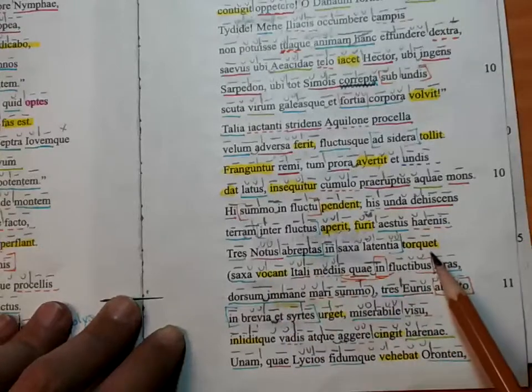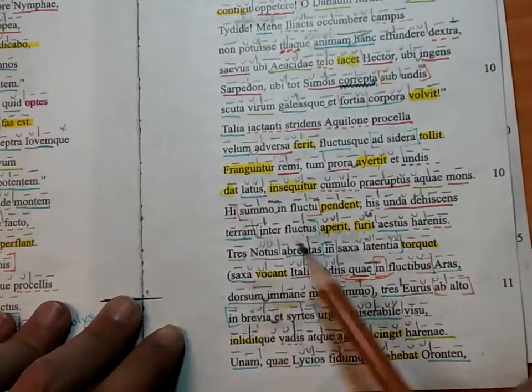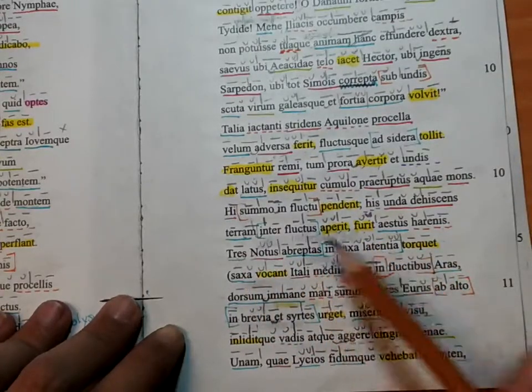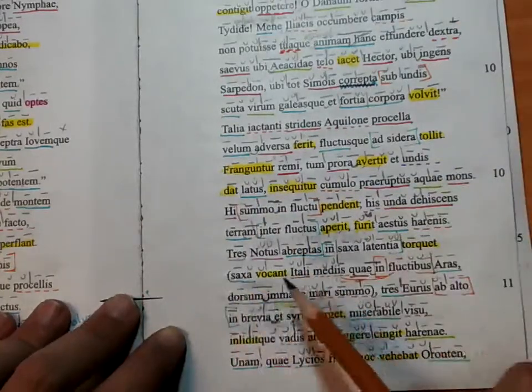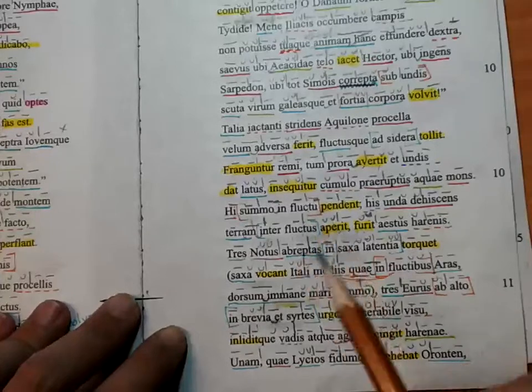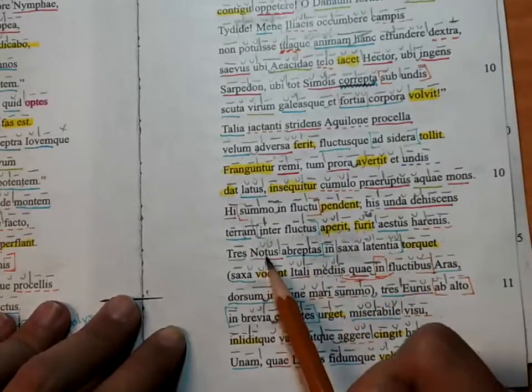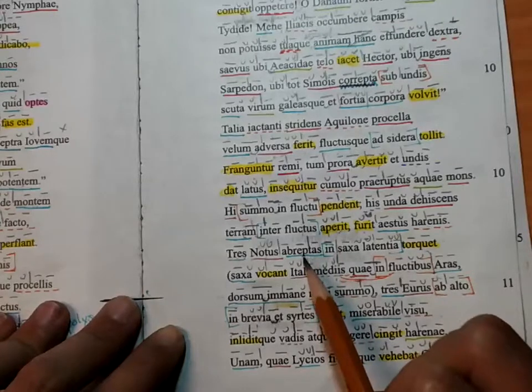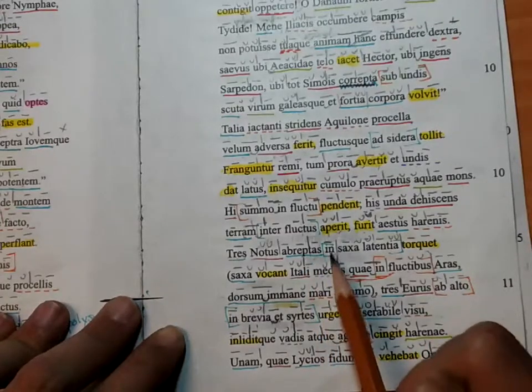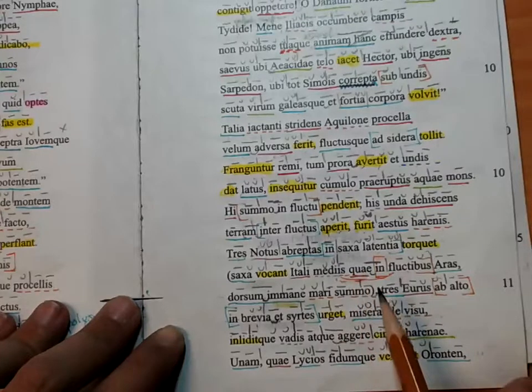The south wind twists three—and this is going to be ships. They're feminine; we know they're sailing. This feminine thing refers to the ships. So the south wind twists three ships, having been carried off onto the hiding rocks.